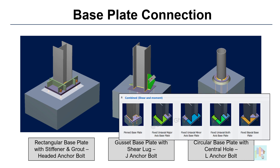We can design the base plate considering uniaxial or biaxial moment. During design, the program not only designs the plate but also performs required checks for the concrete block, based on relevant concrete design code guidelines — such as IS 456 for India or ACI 318 for American code — including shear and tension failure, block failure, and pull-out of anchor bolts.